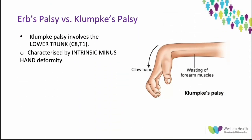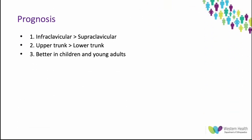Klumpke's palsy involves the lower trunks — C8 and T1 — and is characterized by an intrinsic minus hand deformity, or claw hand. You have wasting of the forearm muscles and a claw hand due to a deficit of the small muscles of the hand, with both ulnar and median nerve involvement. In terms of prognosis, infraclavicular brachial nerve injuries have a better prognosis compared to supraclavicular ones, upper trunk injuries have a better prognosis compared to lower trunk injuries, and overall we have a better prognosis in children and young adults.